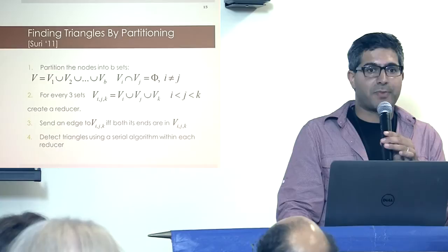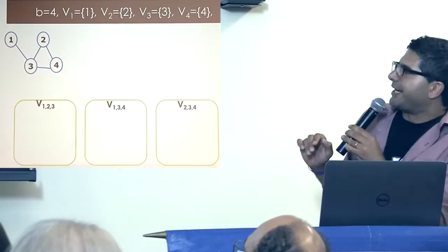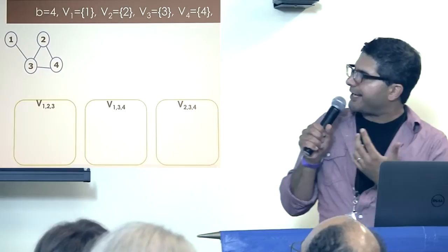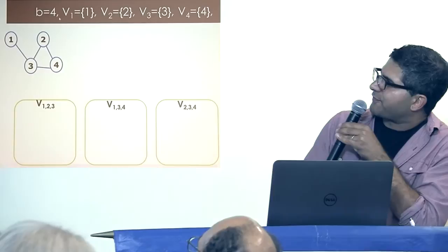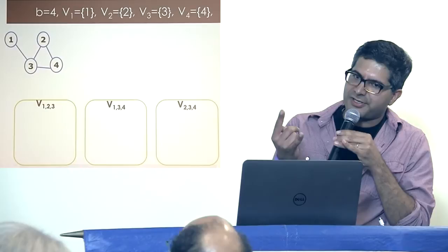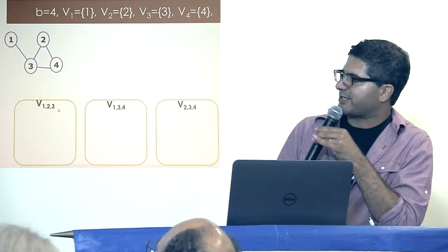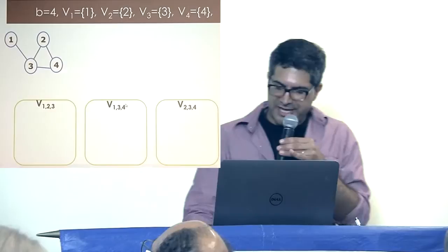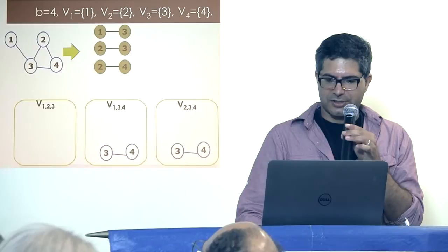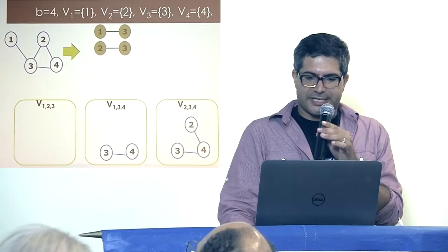With B equals four and four nodes, that's basically a trivial partition: set one has only node one, all the way to set four with only node four. Every three-member subset — I, J, K where I < J < K — gives a bucket. So there are buckets one-two-three, one-three-four, and two-three-four. Every edge I receive is replicated to all buckets where both ends of that edge are part of that bucket.